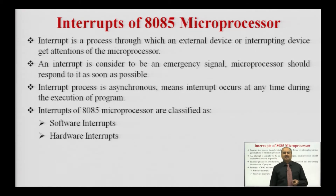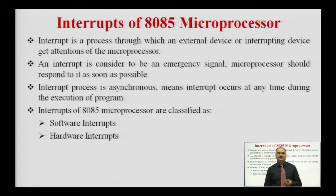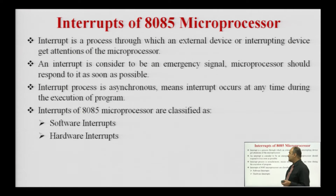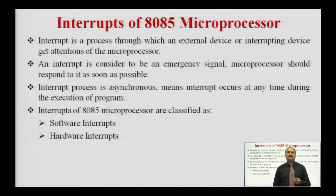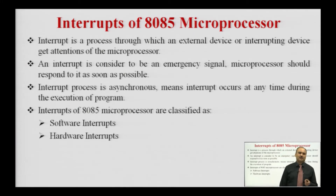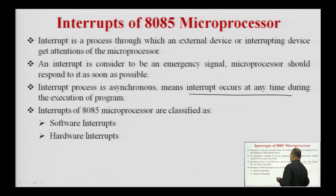This is the conditional return instruction. In the 8085 microprocessor, we have two types of interrupts: software interrupts and hardware interrupts. An interrupt is a process through which an external device or interrupting device gets the attention of the microprocessor. An interrupt is considered to be an emergency signal — the microprocessor should respond to it as soon as possible. Whenever an interrupting device needs attention, it sends an interrupt signal to the microprocessor. The interrupt process is asynchronous in nature, meaning the interrupt can occur at any time during the execution of the program.